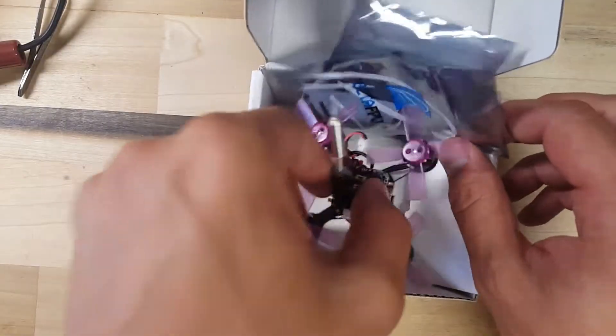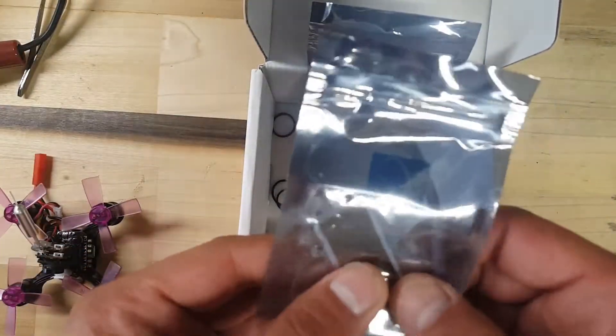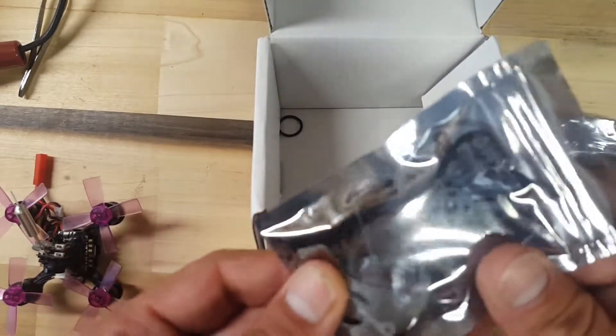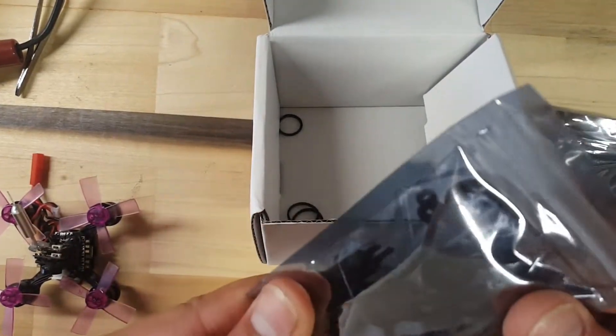In the box you get the quadcopter, some velcro for your battery, extra rubber bands, and the prop guard kits. These are all carbon fiber.